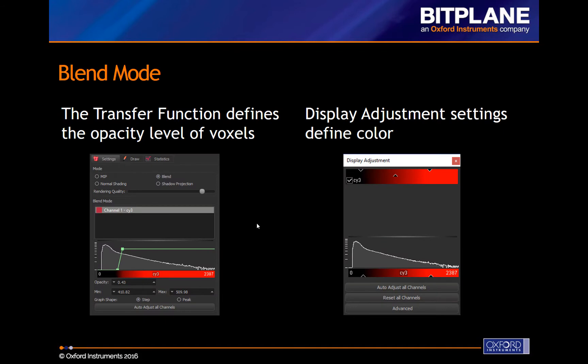The Blend Transfer Function is now found under the Volume Settings tab for Blend Mode. It defines the opacity of the voxels in the rendering. The transfer function is overlaid on the intensity histogram, and its vertical axis is opacity — full opacity at the top and full transparency at the bottom.